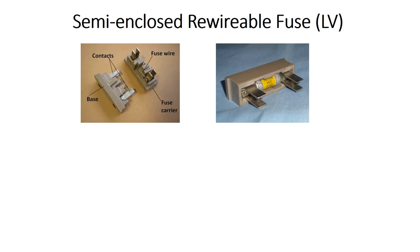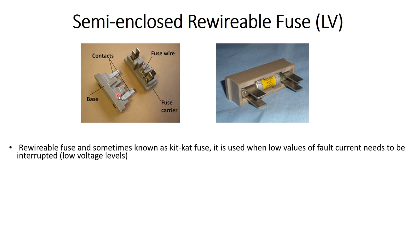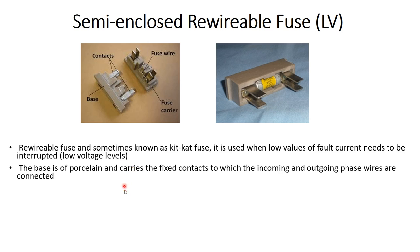The first type used in low voltage is called the semi-enclosed rewireable fuse. This type of fuse is sometimes called a kitkat fuse. It is used when low values of fault current need to be interrupted, so it is used in low voltage levels.